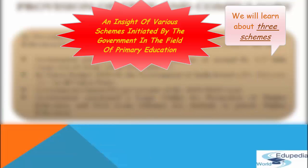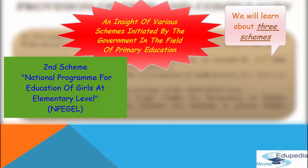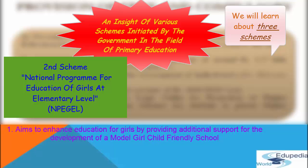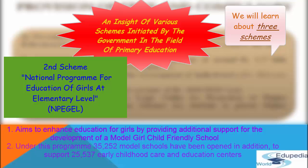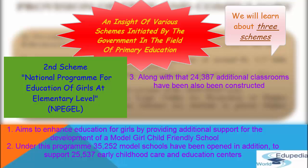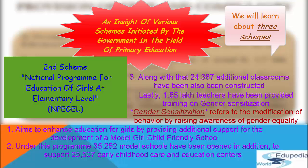The next scheme is the National Programme for Education of Girls at Elementary Level (NPEGEL). The programme aims to enhance education for girls by providing additional support for development of a model girl-child friendly school. Under NPEGEL, 35,252 model schools have been opened, 25,537 early childhood care and education centres supported, 24,387 additional classrooms constructed, and 1.85 lakh teachers given training on gender sensitization.